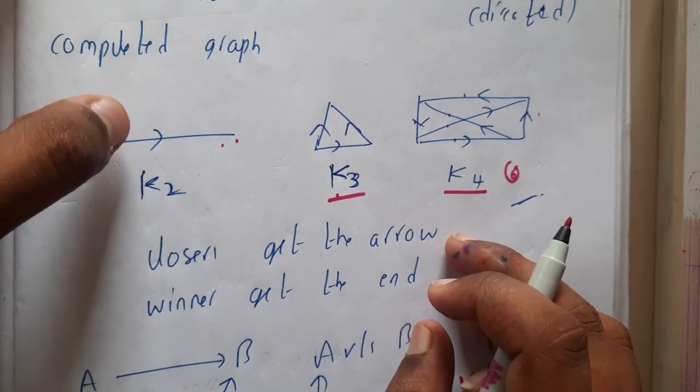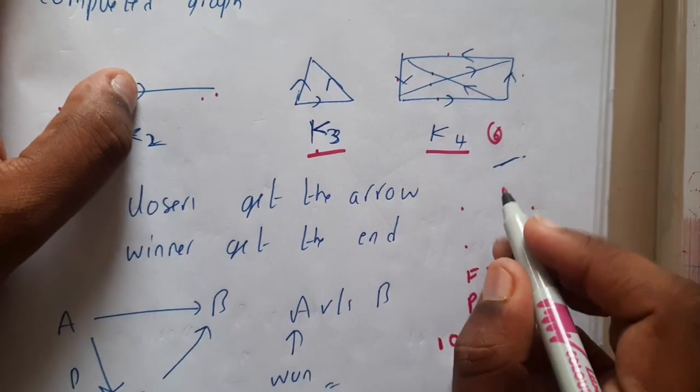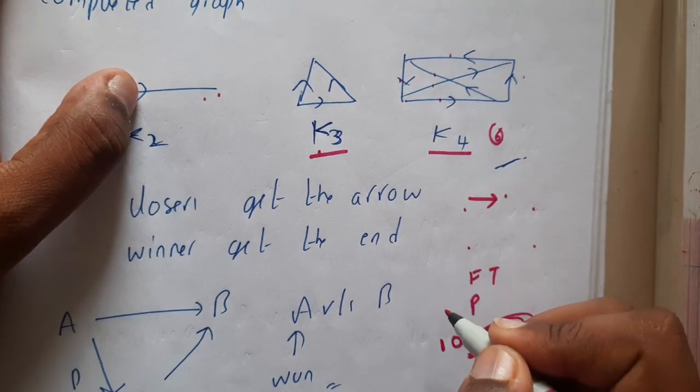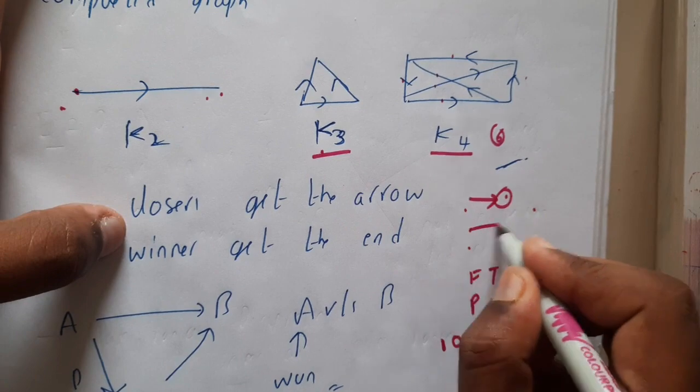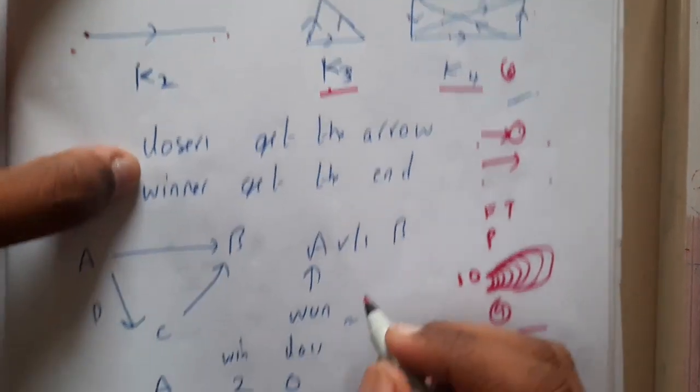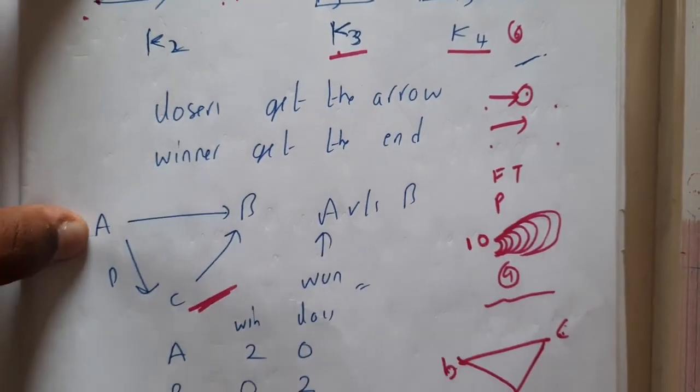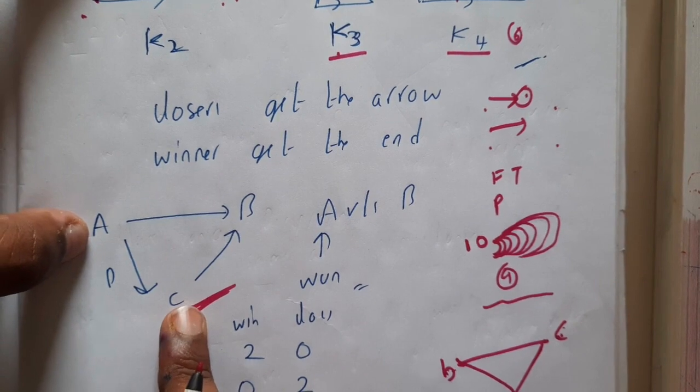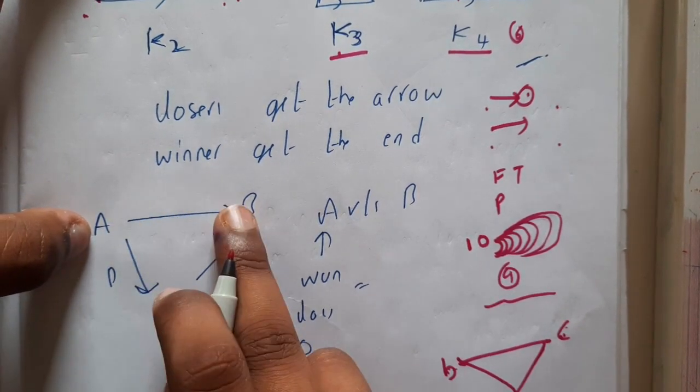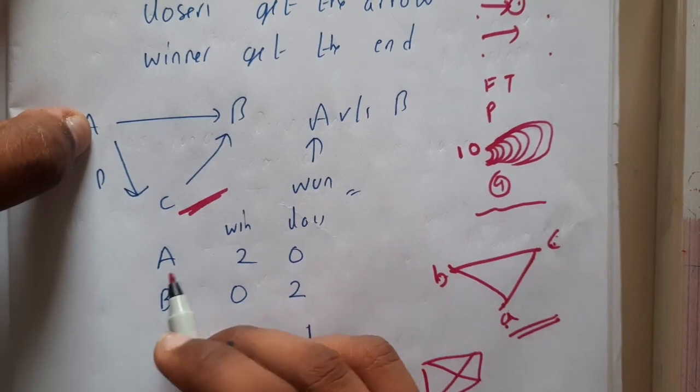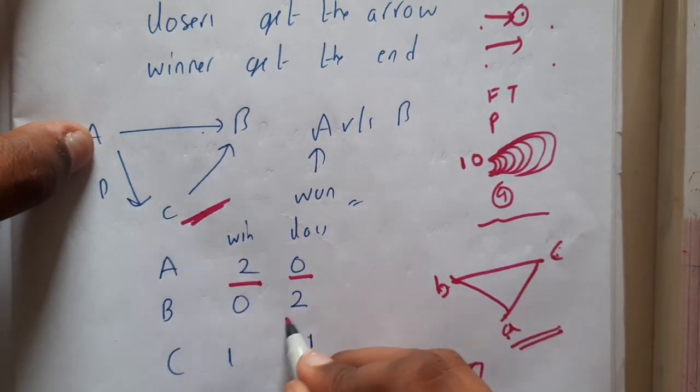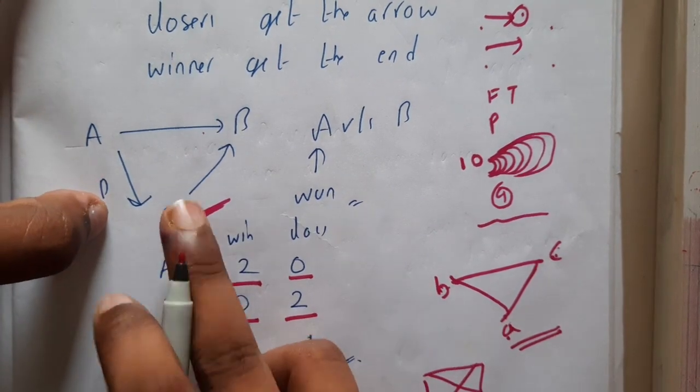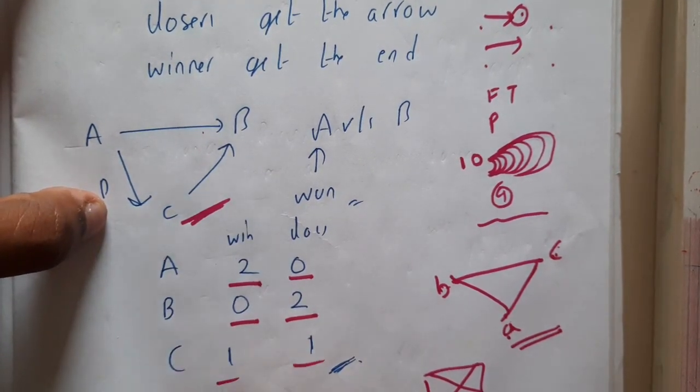A simple logic: once the tournament is done, I told you it's directed. These directions indicate if someone is getting the arrow, he is a loser. If someone is giving an arrow, he is a winner. If you take a small example A, B, C: here the direction is in this way and here the direction is in this way. In both cases, A won the game. So A's winning is two and zero losses. B lost two matches and won zero matches. C lost one and gained one. In this way, the tournaments and everything can be represented in terms of graphs also.